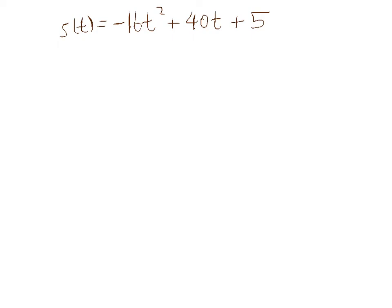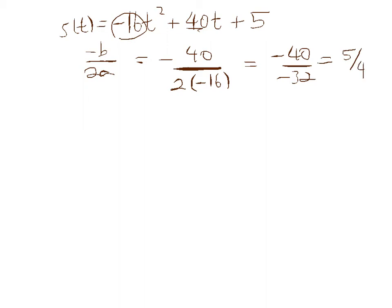All right, to find the y-coordinate of the vertex, we're first going to find the x-coordinate of the vertex, and there's a formula for that that's negative b divided by 2 times a. So in this case, it's going to be negative b is 40 divided by 2 times a is negative 16. So that's equal to negative 40 over negative 32, which simplifies to 5 fourths. So the x-coordinate of the vertex is 5 fourths.